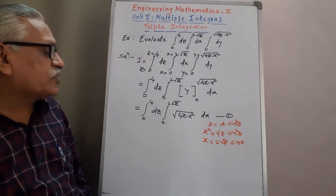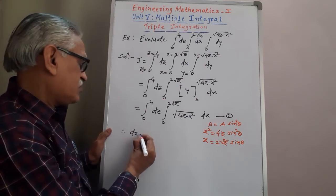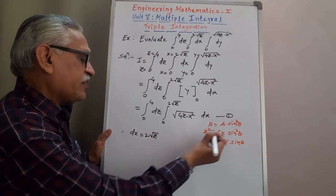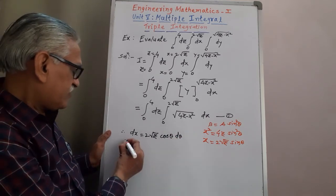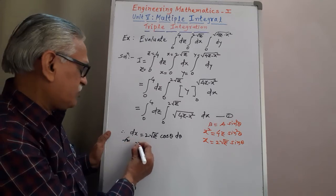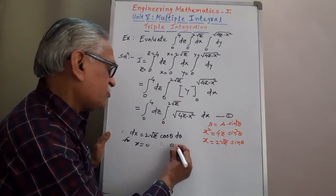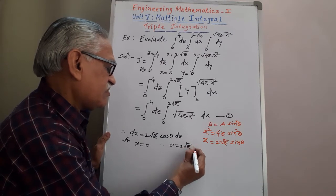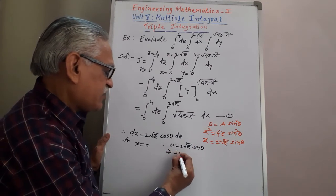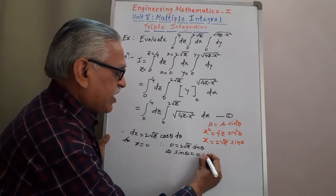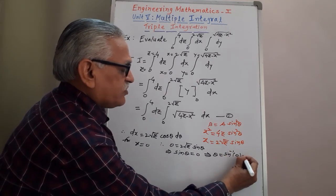Differentiating with respect to theta, we get: dX equals 2 root Z cos theta d theta, where 2 root Z is a constant term. For the new limits: when X equals 0, we get 0 equals 2 root Z sin theta, so sin theta equals 0, which implies theta equals sin inverse of 0, and sin inverse of 0 is 0. So the lower limit is theta equals 0.